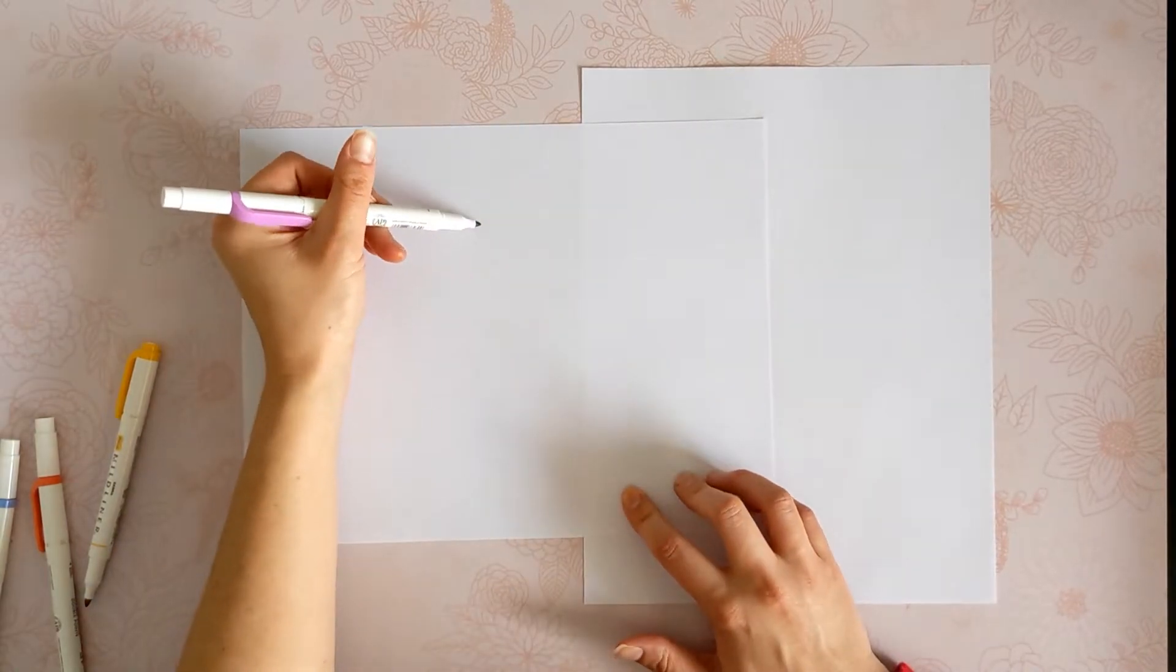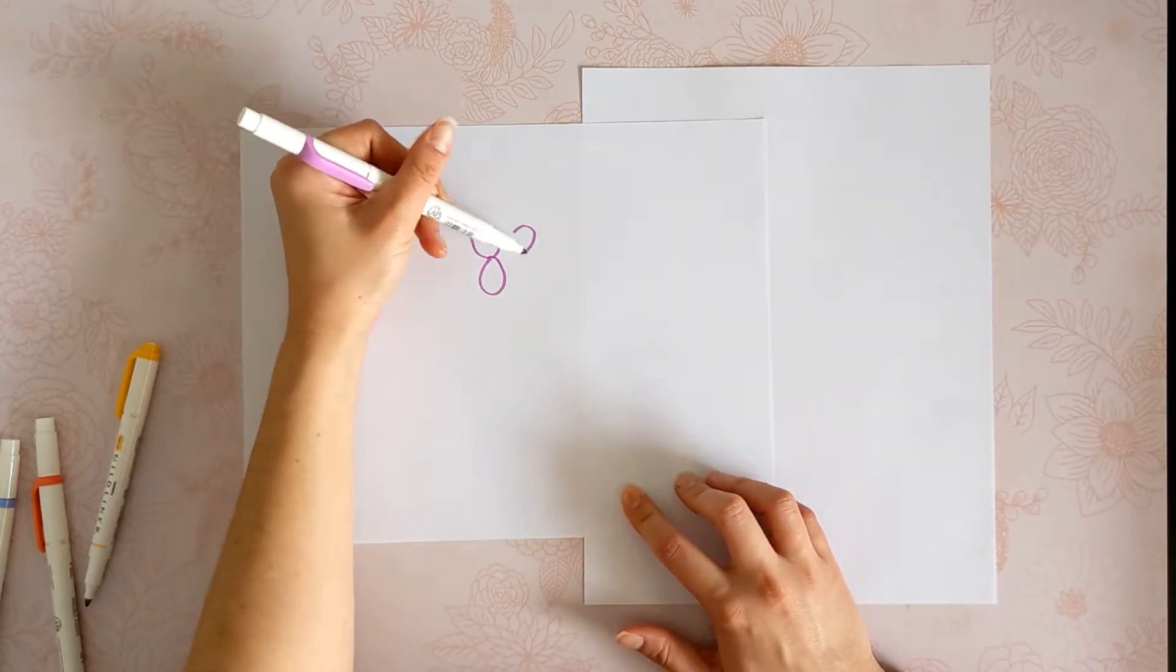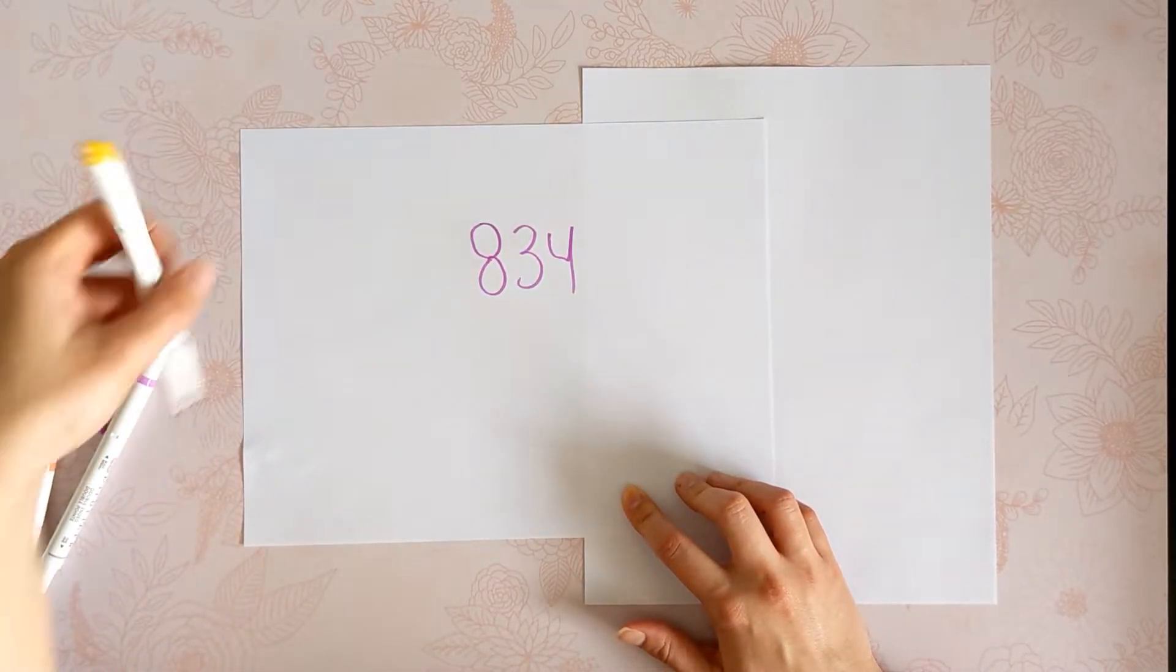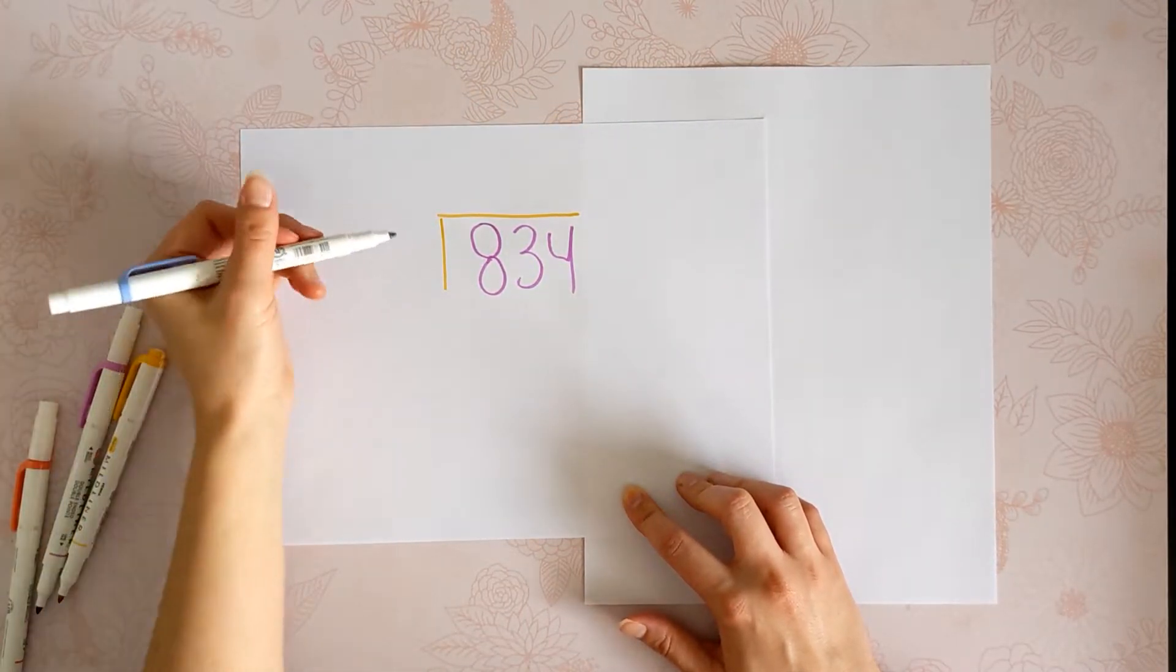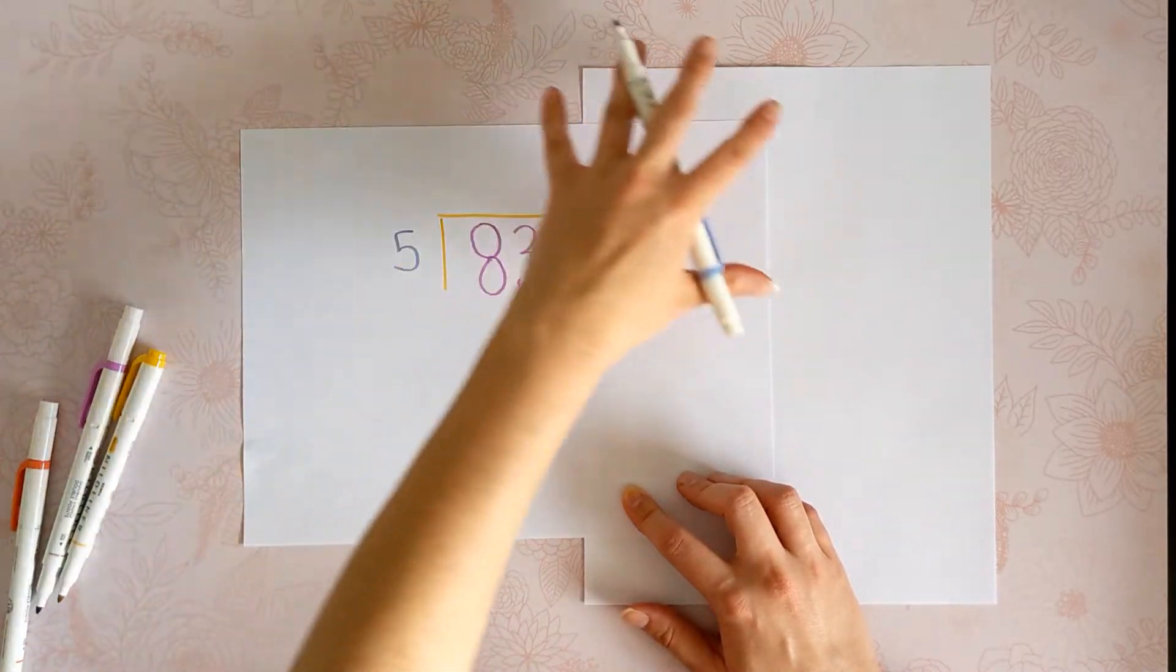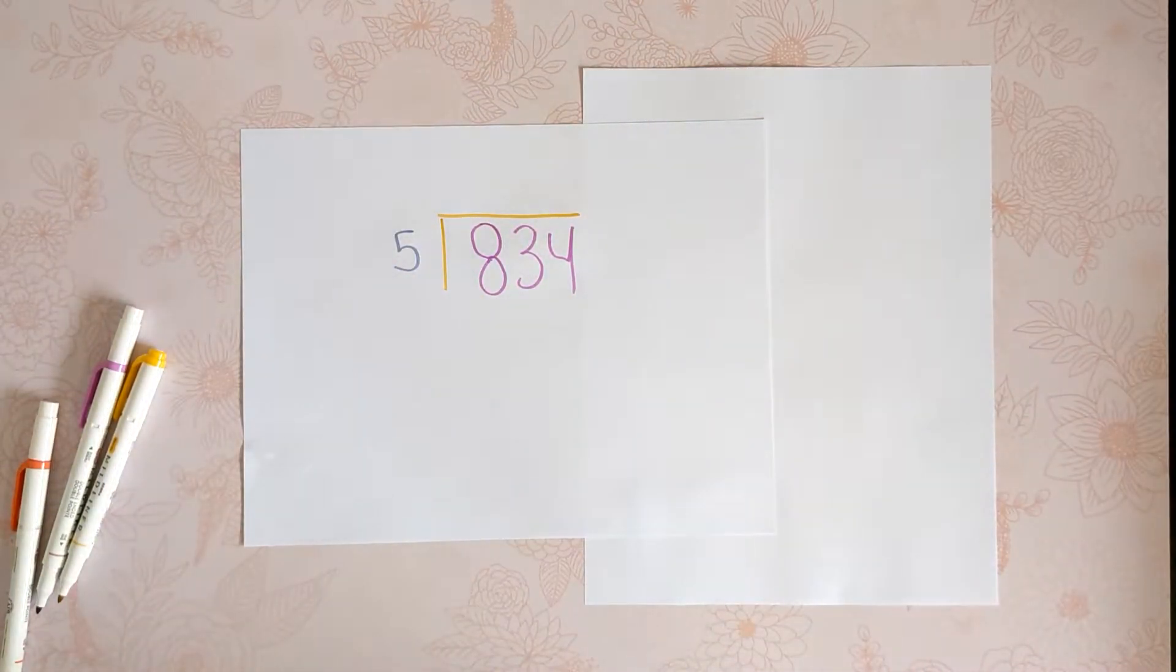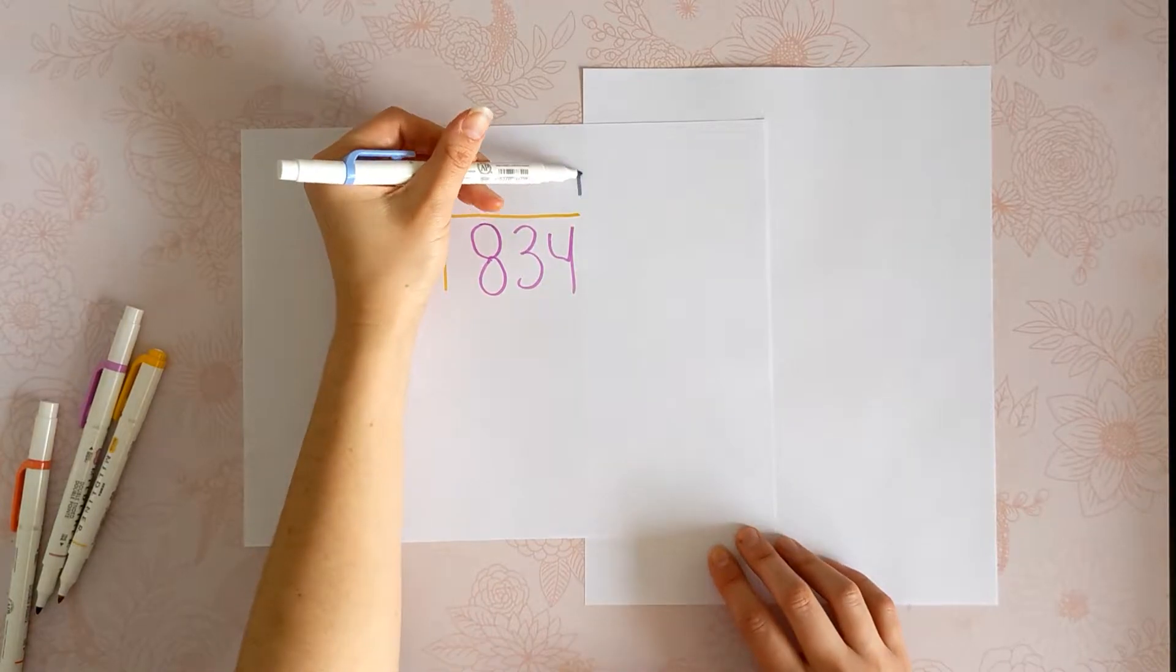We are going to do 834 divided by 5. And we are going to have a remainder, meaning you can't actually divide 834 up equally into 5 groups. There's going to be some left over that can't be divided up and that'll be your remainder.